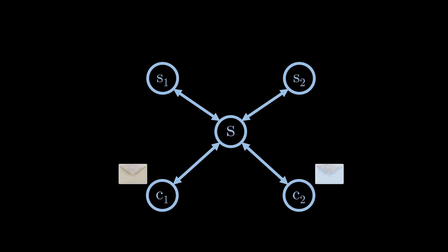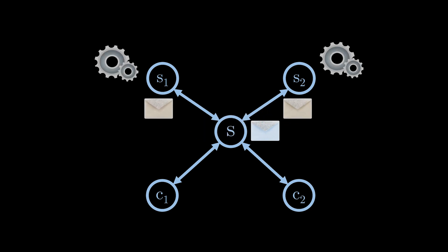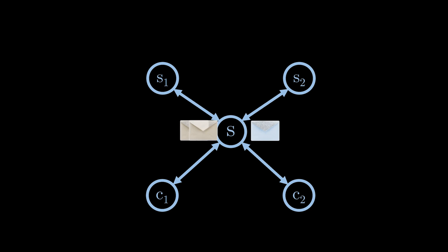In the example here, it receives two commands but only forwards the first command to both servers for processing. Once it receives the response from both servers, it sends the response to client 1. After that, it sends the second command to the servers for processing. The result is returned to the serializer, which in turn forwards it to client 2.